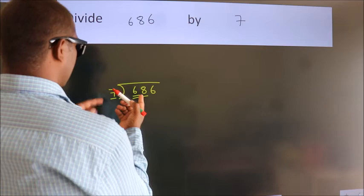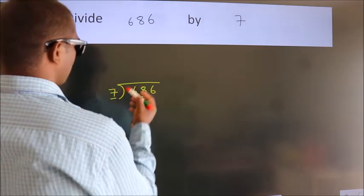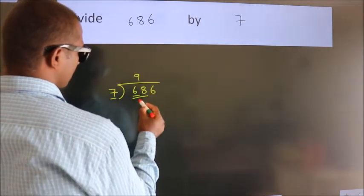A number close to 68 in 7 table is 7 nines, 63.